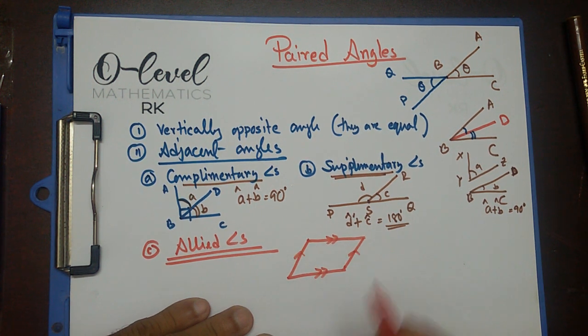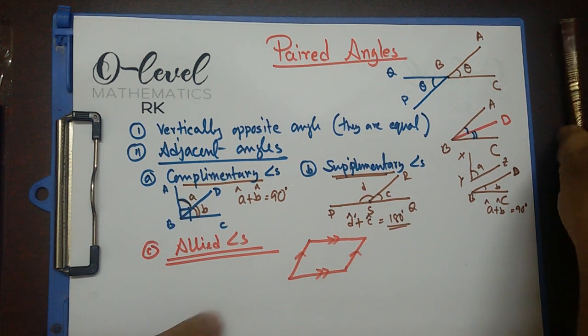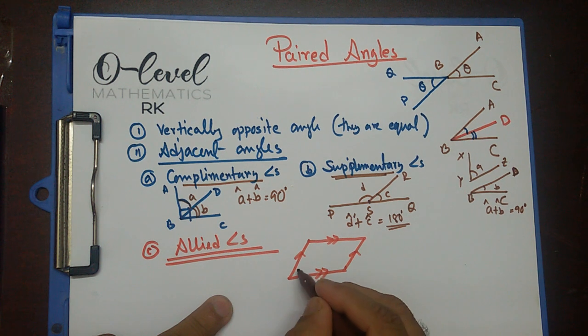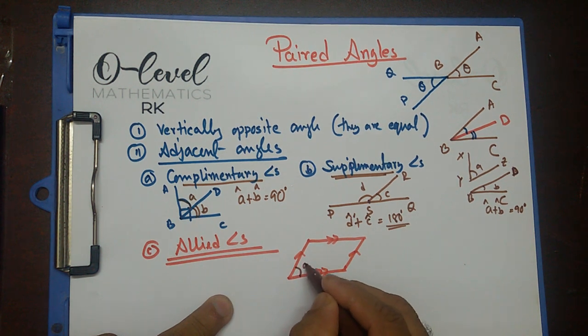In this example, let's say this is a parallelogram. The adjacent angles — let's say angle A and angle B — are having a common arm.